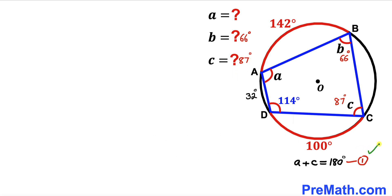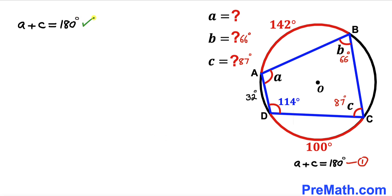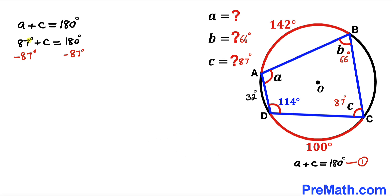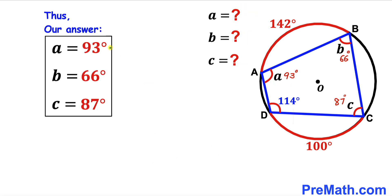Using equation 1 — angle A plus angle C equals 180 degrees — and substituting angle C as 87 degrees, then subtracting 87 degrees from both sides gives angle A equals 93 degrees. So after all calculations: angle A is 93 degrees, angle B is 66 degrees, and angle C is 87 degrees. Thanks for watching.